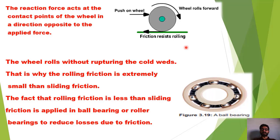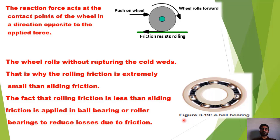چونکہ rolling friction، sliding friction سے کم ہوتی ہے یہی procedure ہم ball bearings میں استعمال کرتے ہیں۔ Ball bearings میں balls ہوتی ہیں جو surface کے ساتھ roll کر رہی ہوتی ہیں۔ اگر یہ balls نہ ہوتیں تو ball bearing کا inner حصہ outer حصے کے ساتھ slide کرتا جس کی وجہ سے friction کافی زیادہ produce ہونی تھی اور energy کا loss زیادہ ہونا تھا۔ Inner race اور outer race کے درمیان steel کے balls use کرتے ہیں جو دونوں races کے درمیان roll کرتے ہیں۔ ان کی rolling کے نتیجے میں friction کافی حد تک کم ہو جاتی ہے اور ball bearings کو different machines اور vehicles میں use کرتے ہیں۔